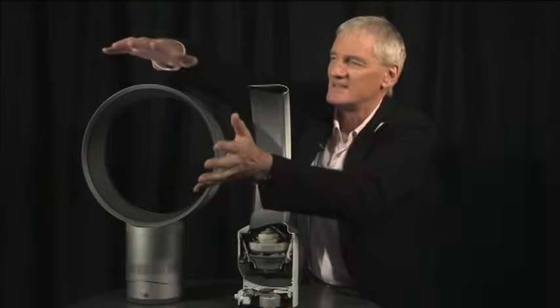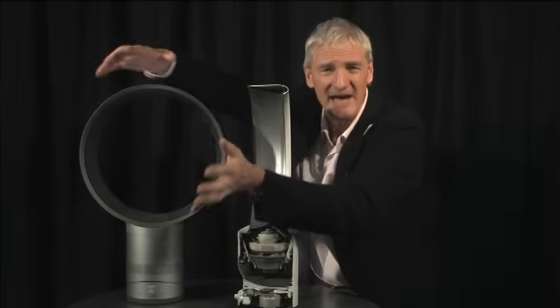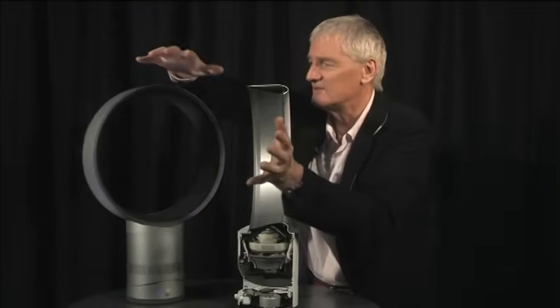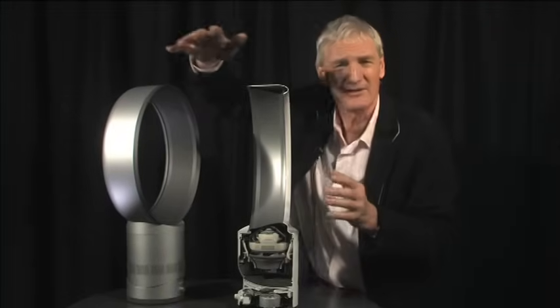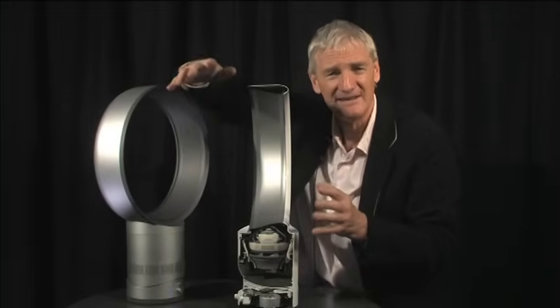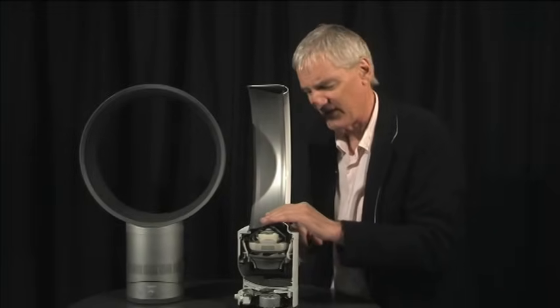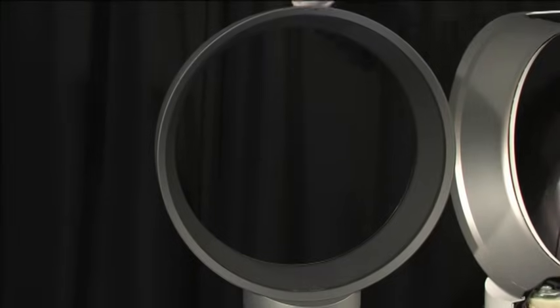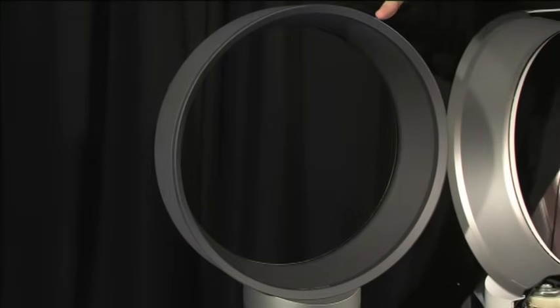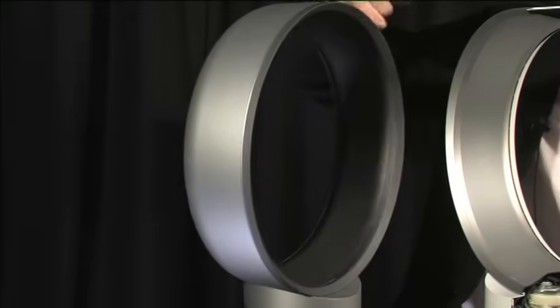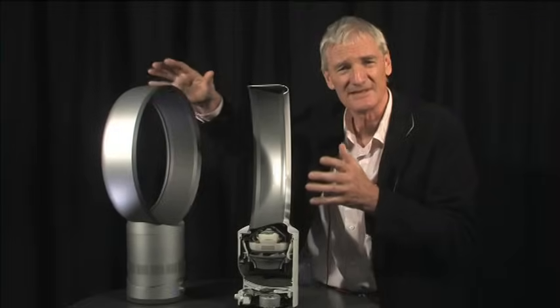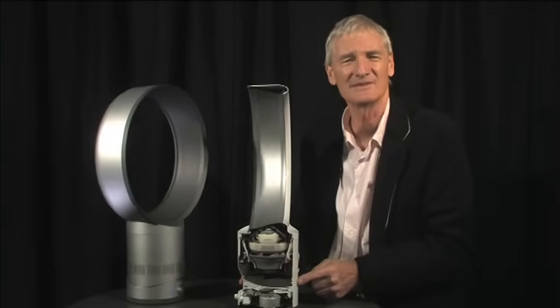And then as it exits, as a cylinder of air, breeze coming at you, you add more air through something called viscous shearing. So there are three ways from this aircraft wing shape here, the expanding cone and then the viscous shearing that occurs here, multiplies the air from 1 to 16 times. So you get 16 times the original airflow that was going through here.